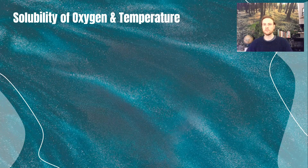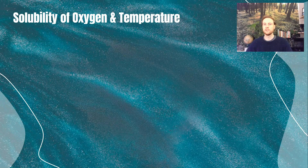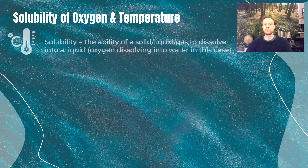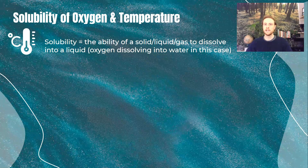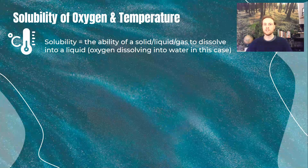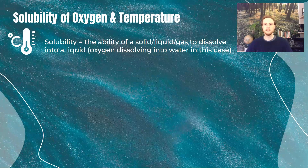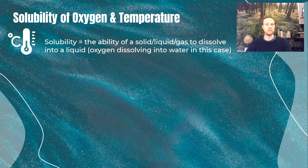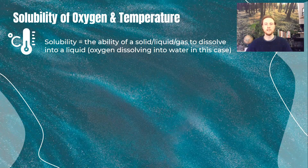Before we get into sources of thermal pollution and its effects on organisms, we have to understand the solubility of oxygen in water. Solubility is the ability of a solid, liquid, or gas to dissolve into a liquid — in this case, that gas is oxygen and that liquid is water. Oxygen is needed by all organisms, even aquatic ones. Fish pull oxygen out of the water via their gills, so it's critical to understand the relationship between temperature in a water source and the oxygen in that water source.